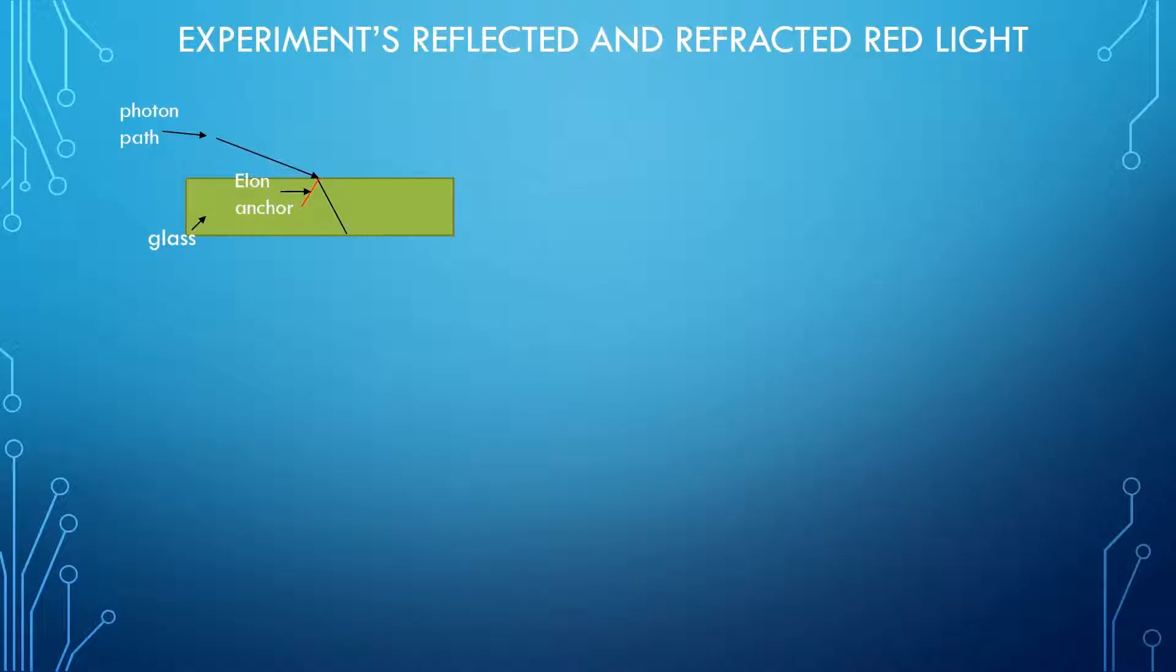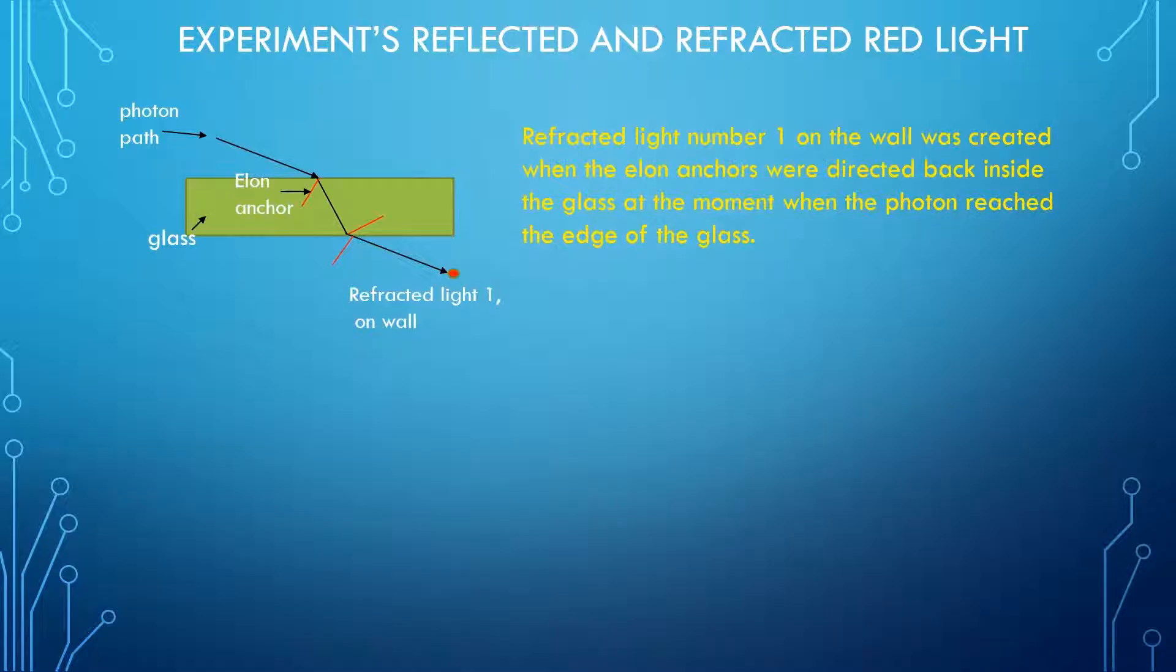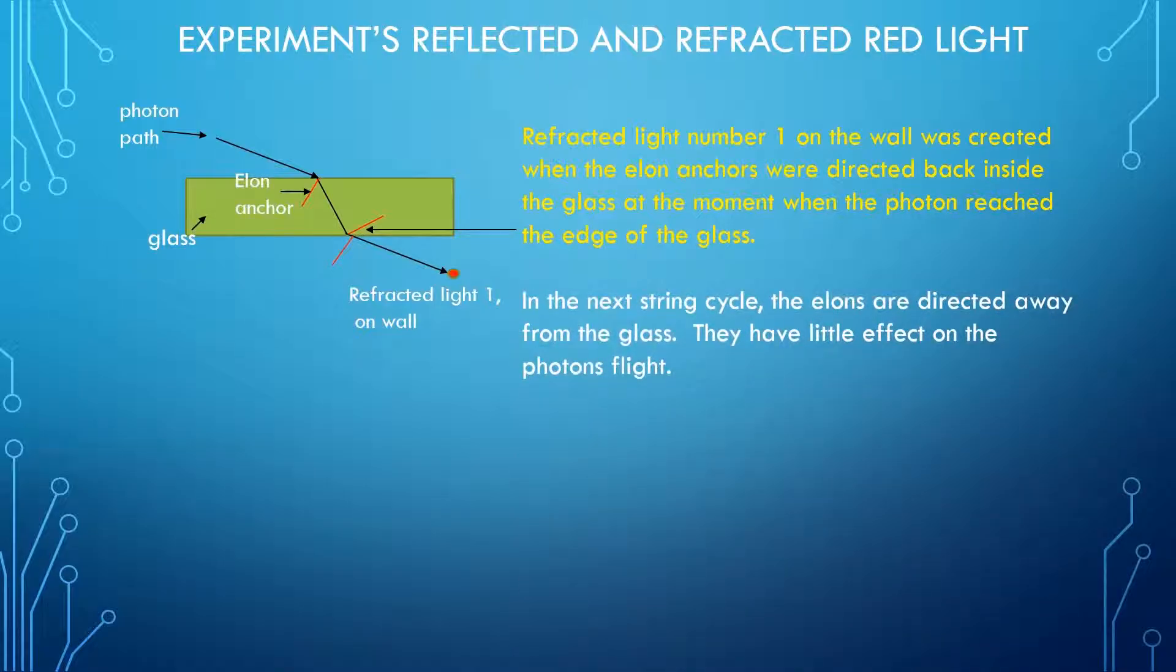The light that exits the glass also depends on the state of the string cycle. Refracted light number one on the wall was created when the elon anchors were directed back inside the glass at the moment when the photon reached the edge of the glass. In the next string cycle, the elons are directed away from the glass. They have little effect on the photon's flight.